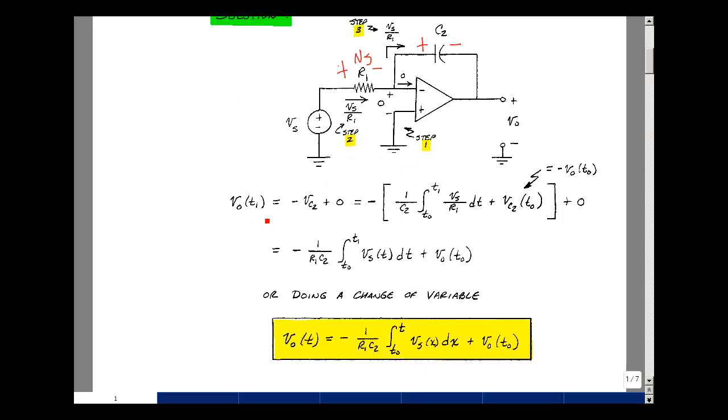We could also do a change of variable here and replace T1 by T, and then we put T over here, and we should use a different variable here because it would mean something very different if we left T here. So let me tell me variable X again.